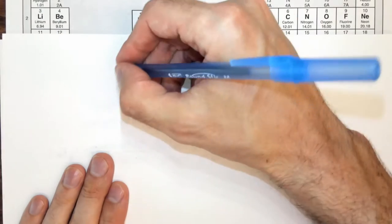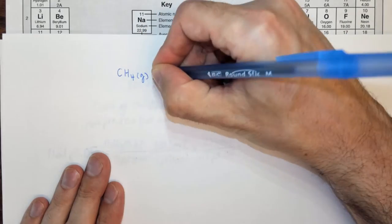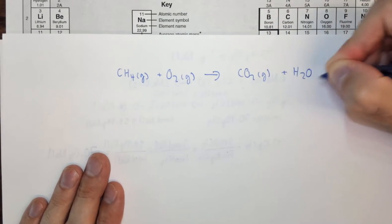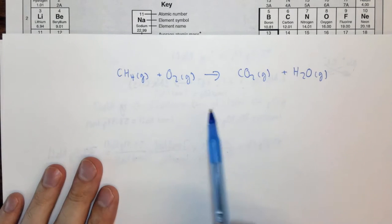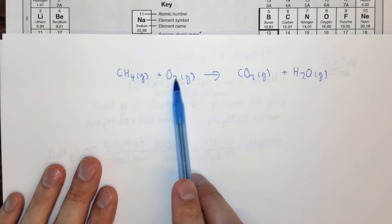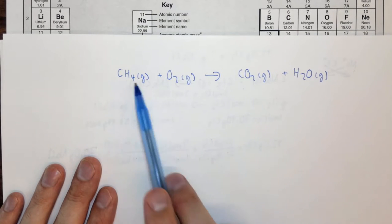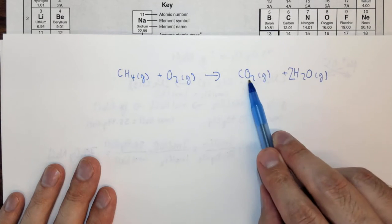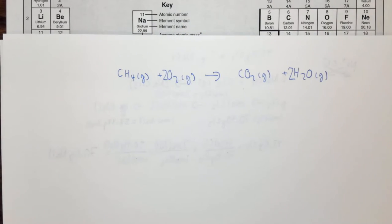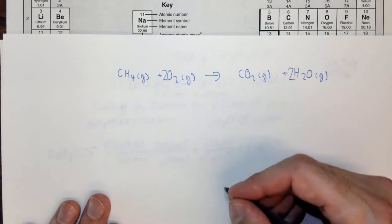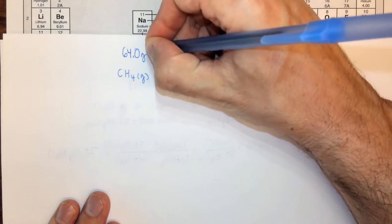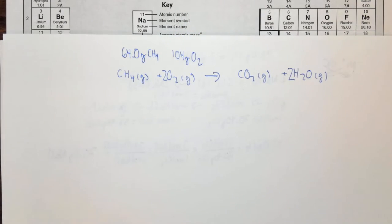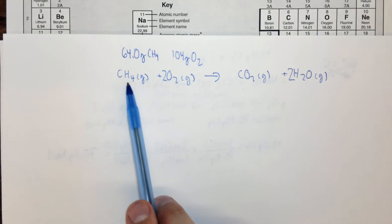Let's assume we have this reaction: methane plus oxygen yields carbon dioxide plus water. This is a combustion reaction, so the first thing we do is balance the chemical equation. We balance carbon, then hydrogen, then oxygen. Carbon is balanced one-to-one. All hydrogen goes into water, so we need two H₂O. That gives us four oxygens total, so we need two O₂. We start with 64.0 grams of CH₄ and 104 grams of O₂.